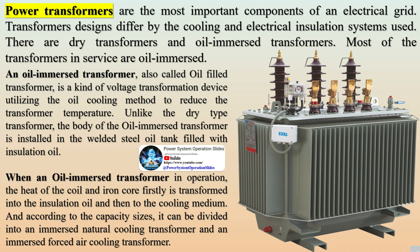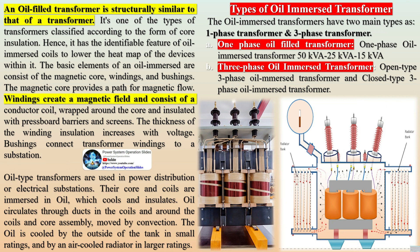An oil-immersed transformer, also called an oil-filled transformer, is a kind of voltage transformation device utilizing the oil cooling method to reduce the transformer temperature. Unlike the dry-type transformer, the body of the oil-immersed transformer is installed in a welded steel oil tank filled with insulation oil. When an oil-immersed transformer is in operation, the heat of the coil and iron core is first transferred into the insulation oil and then to the cooling medium. According to capacity sizes, it can be divided into an immersed natural cooling transformer and an immersed forced air cooling transformer.